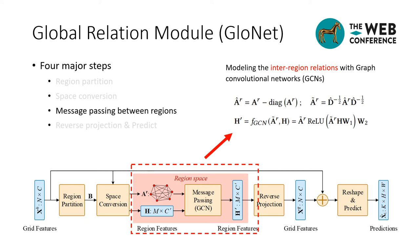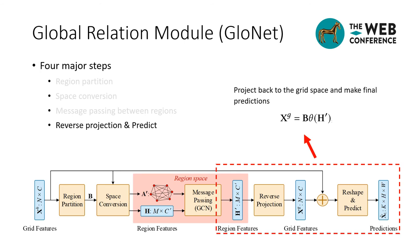To model inter-region relationships, a natural idea is to use graph convolutional networks to perform message passing between regions based on the adjacency matrix. In this way, regional information is passed through the graph to generate a global-aware representation for each region. Once we obtain the global-aware features from region space, the next step is to project them back to the original grid space. Similar to the space conversion step, we reuse the assignment matrix to project region features back to grid cell features by a linear combination, avoiding extra operations and additional overhead.